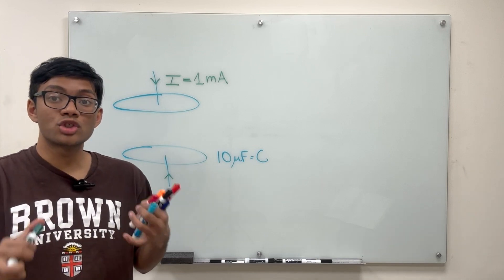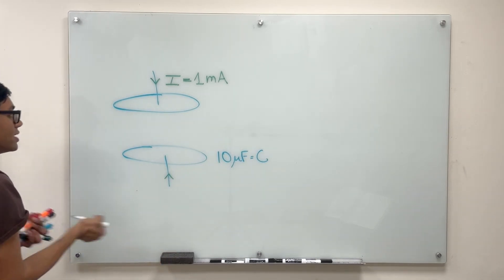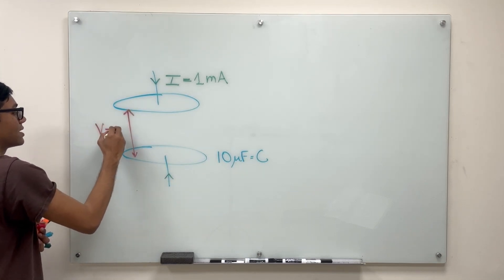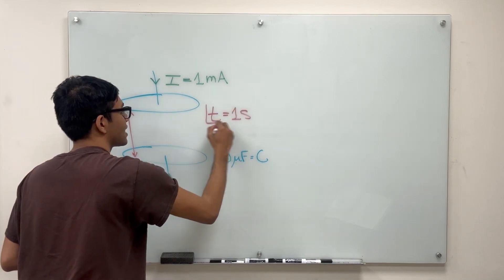The question is what is the potential difference between the two plates of the capacitor after one second? What is the potential difference between the two plates after t equals one second?